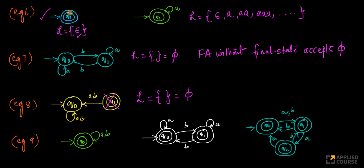By contrast, this other finite state machine can accept epsilon because you're starting at the initial state which is also the final state, and with empty string you stay there. The one with the unreachable final state can't accept epsilon.